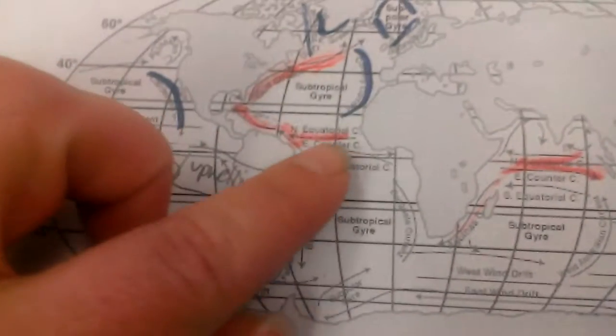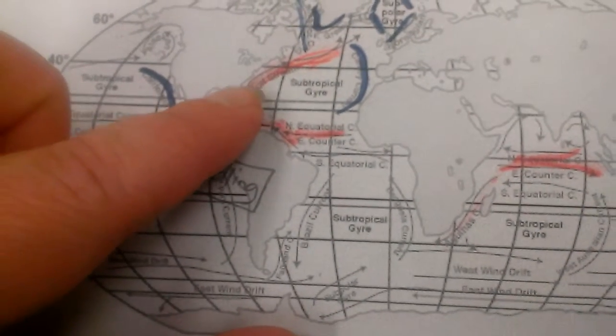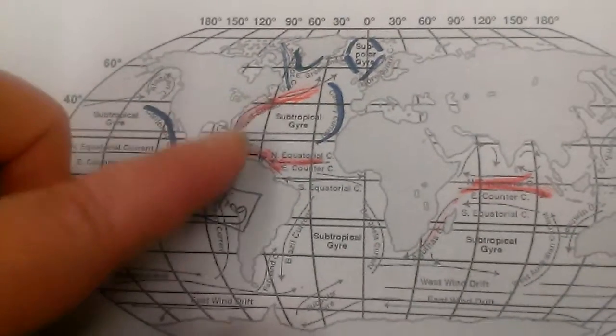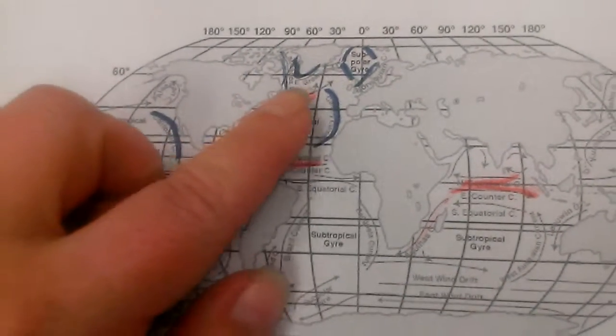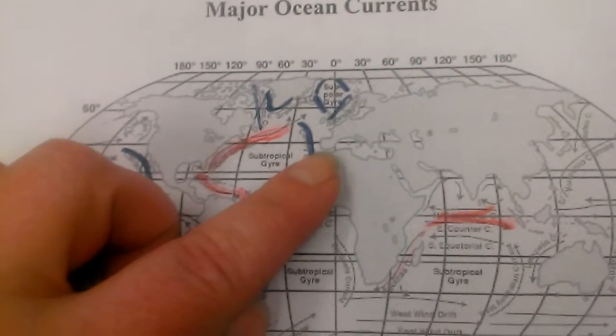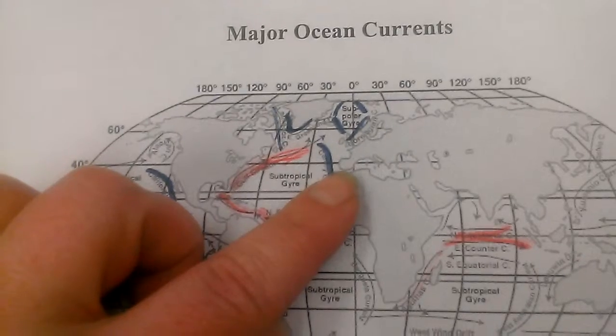Into the United States, we have warm water coming from the equator up towards Florida and connecting with our Gulf Stream that brings warm water across the United States on the east coast. It also carries that warm water over to Europe to give Europe, places like Great Britain, a warmer climate than other places at the same latitude.